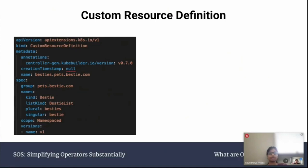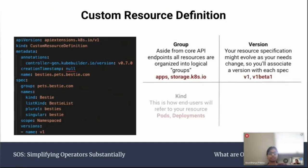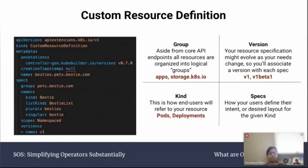For a custom resource, there are a few different things you need for your API. The REST API is the fundamental fabric of Kubernetes — all operations and communications between components and external user commands are REST API calls that the API server handles. The API server exposes an HTTP API that lets end users, different parts of your cluster, and external components communicate with one another. This is how all the components of your cluster communicate with the control plane and the API server.